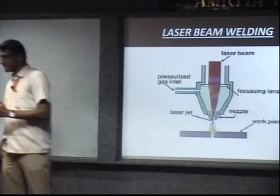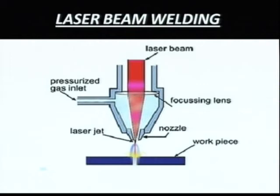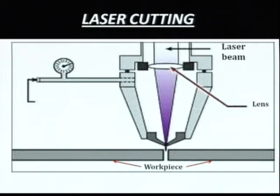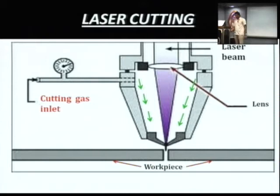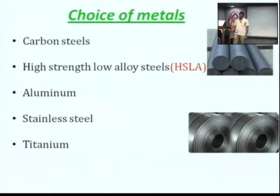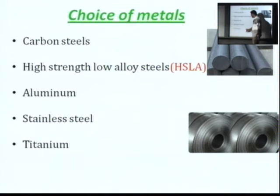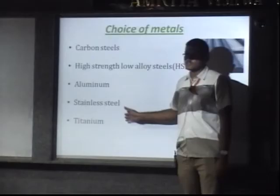Next is laser cutting. This is also very similar to laser beam welding, but the difference is that here you are using a cutting gas to make the cut. You can see the green arrows indicating the gas flow. The metals that you can choose for this type of process are mostly aluminum, carbon steels, and titanium. For stainless steel, only certain grades are possible: SS 316, SS 308, and some duplex stainless steels.